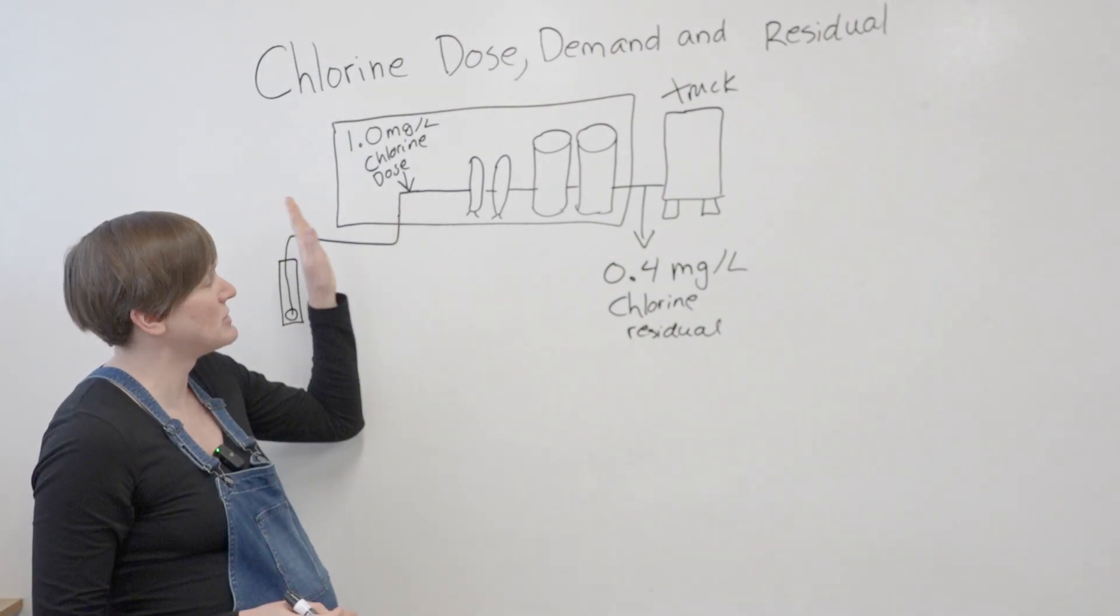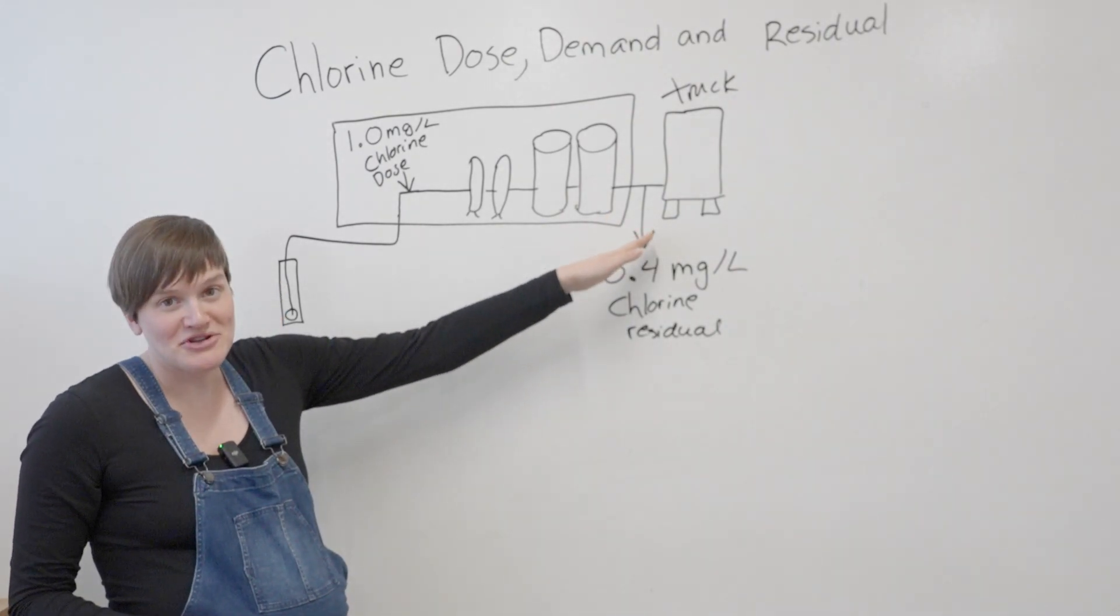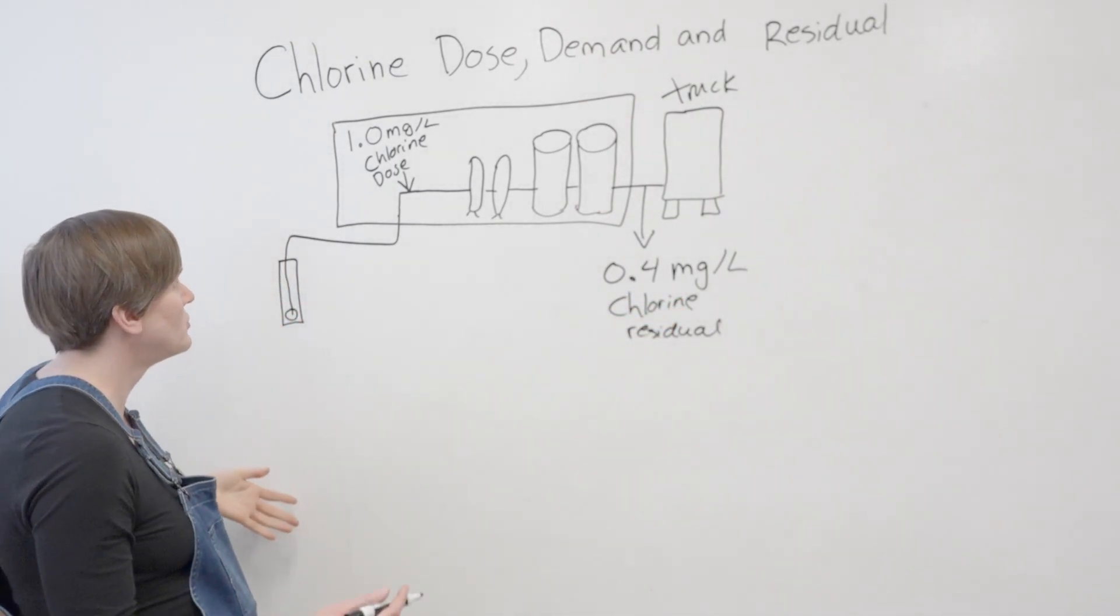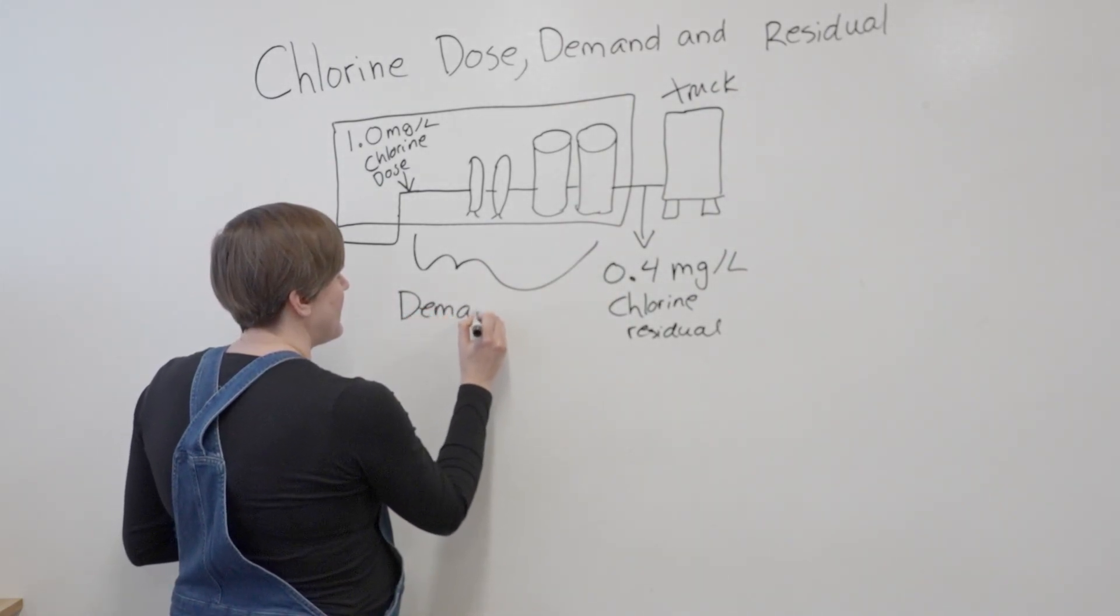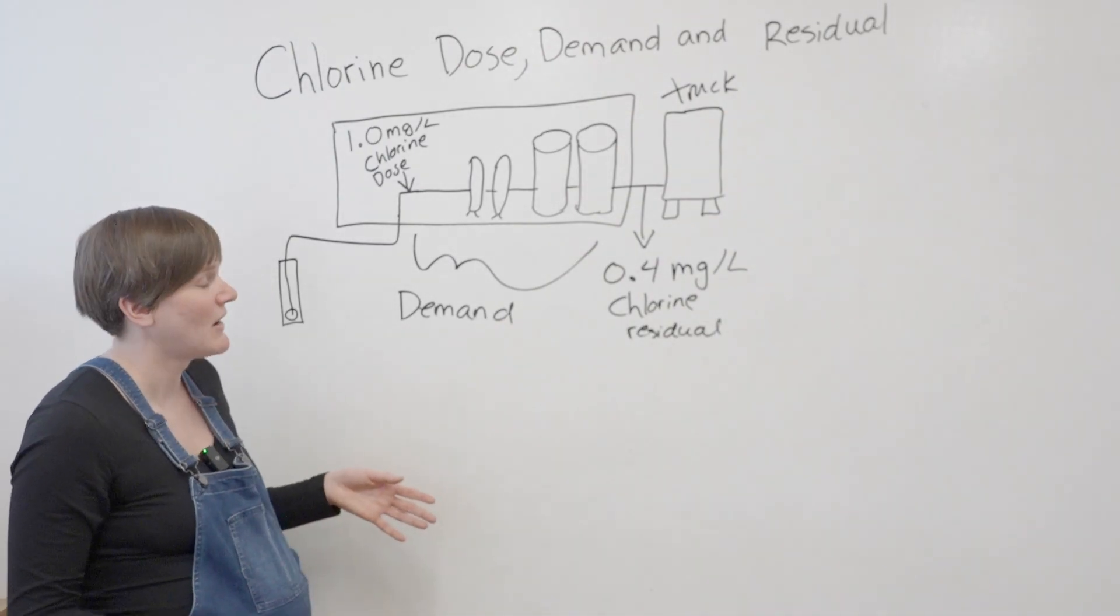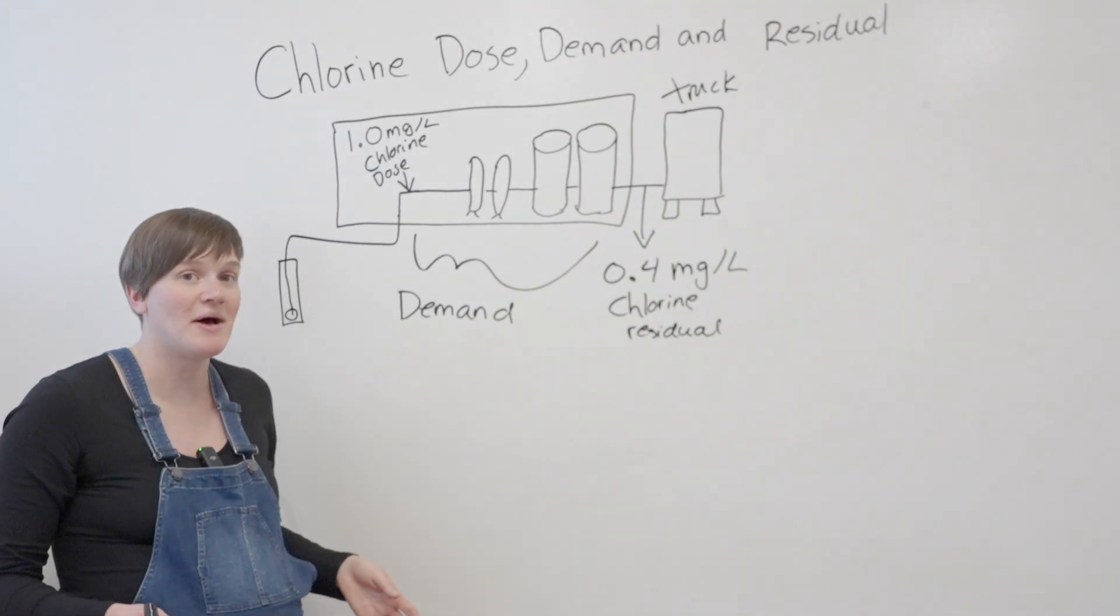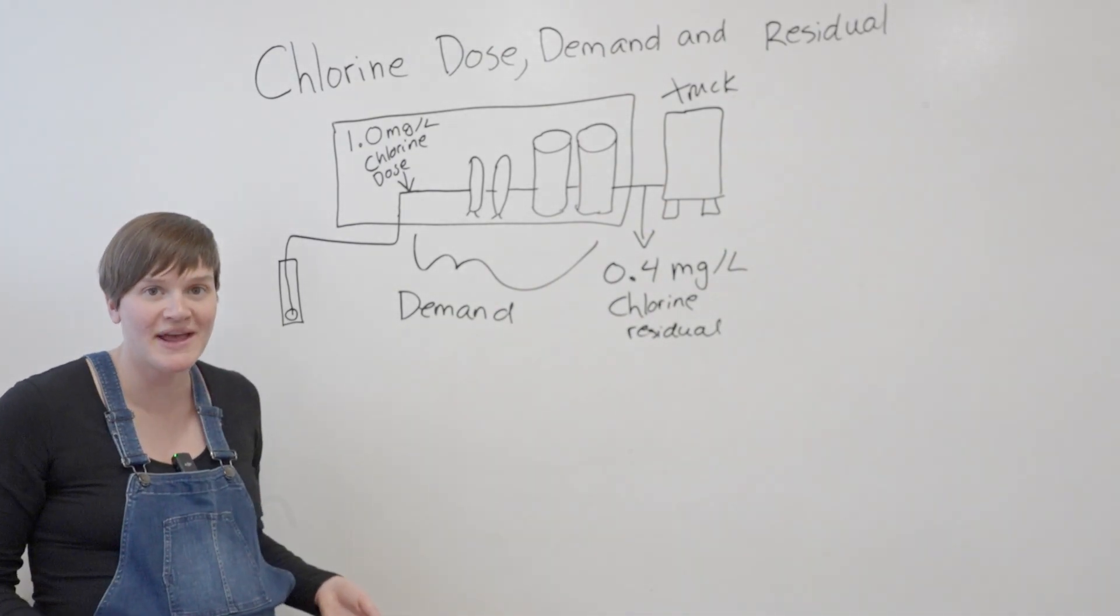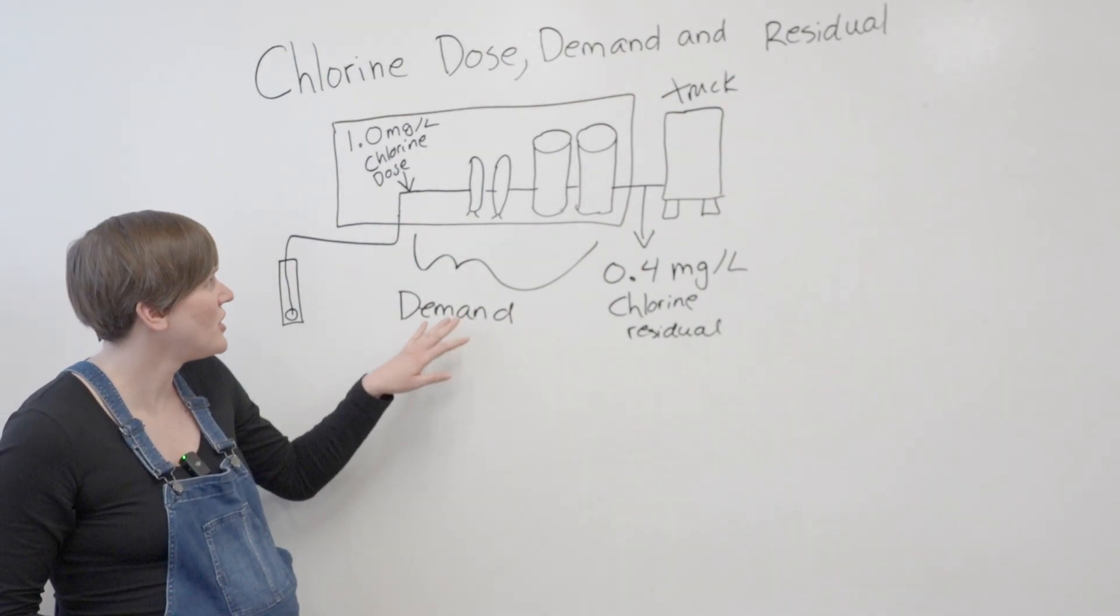So there's a difference here. You know your chlorine pumps are putting in one milligram for every liter of water, but in your distribution system you only have 0.4 milligrams for every liter of water. The difference here is what we call the demand. There's a lot of different things in water that can use up chlorine. If you have iron in the water, that can react with chlorine and use up some of that chlorine. The pathogens in the water also use up chlorine, and other organics. There's lots of stuff, so all that stuff together we call the demand.